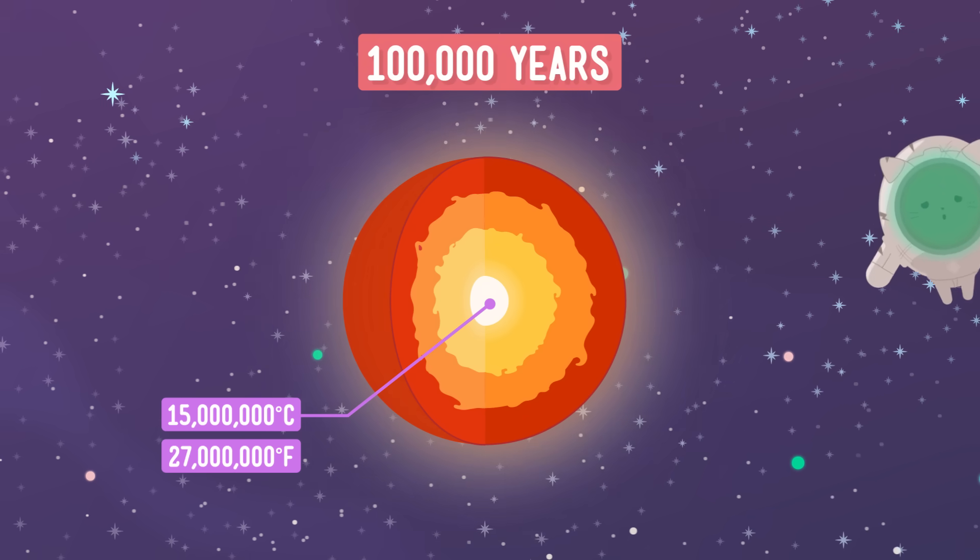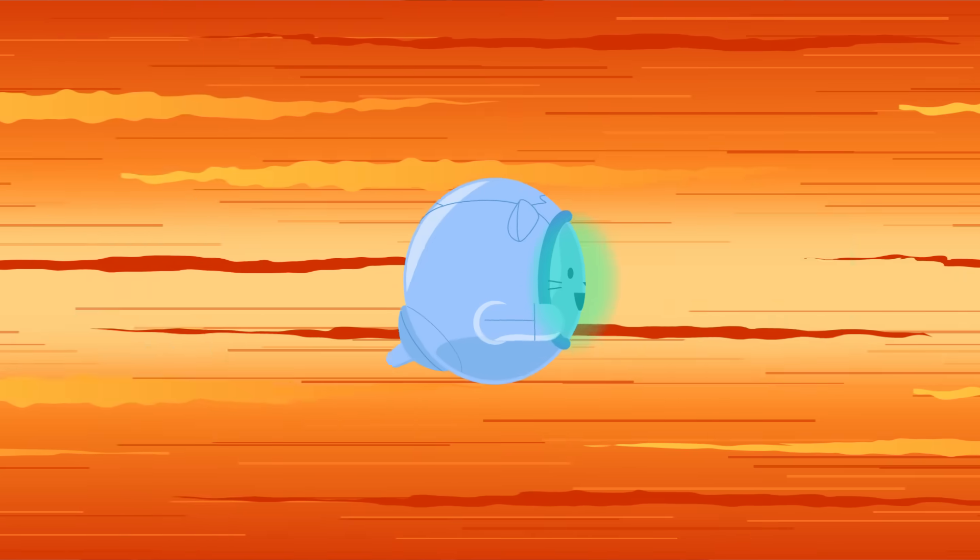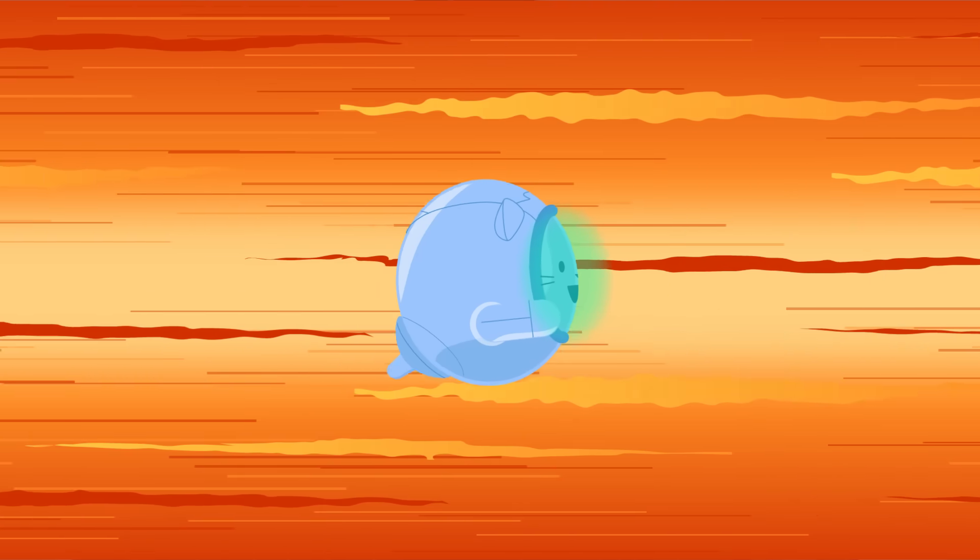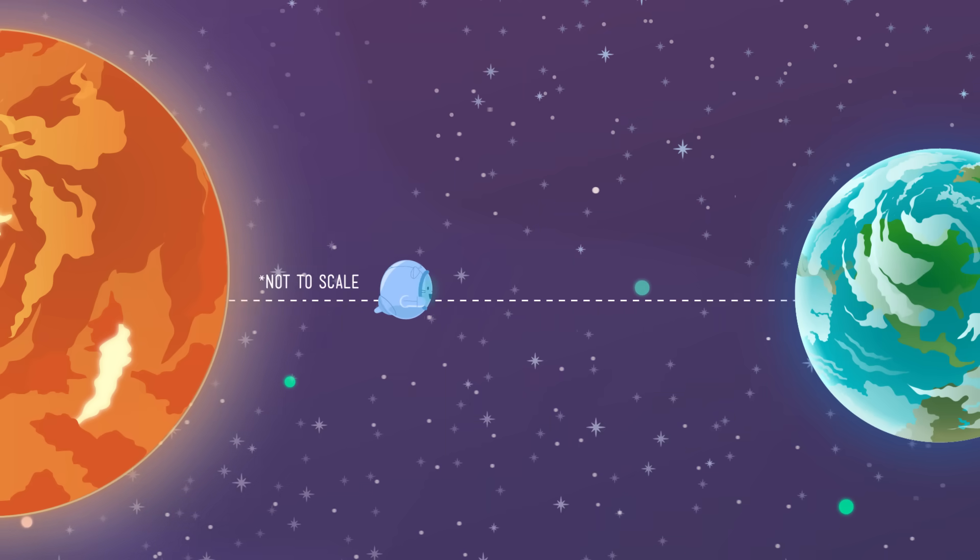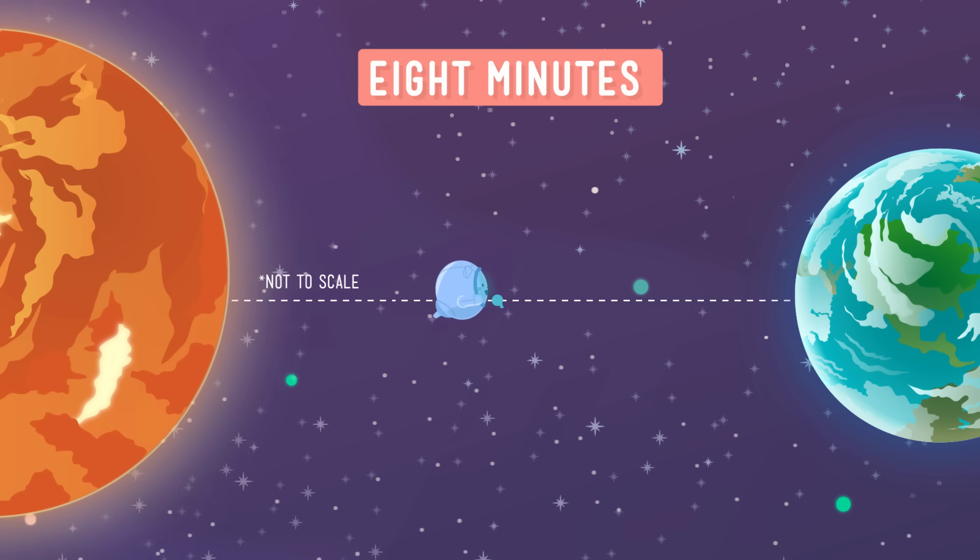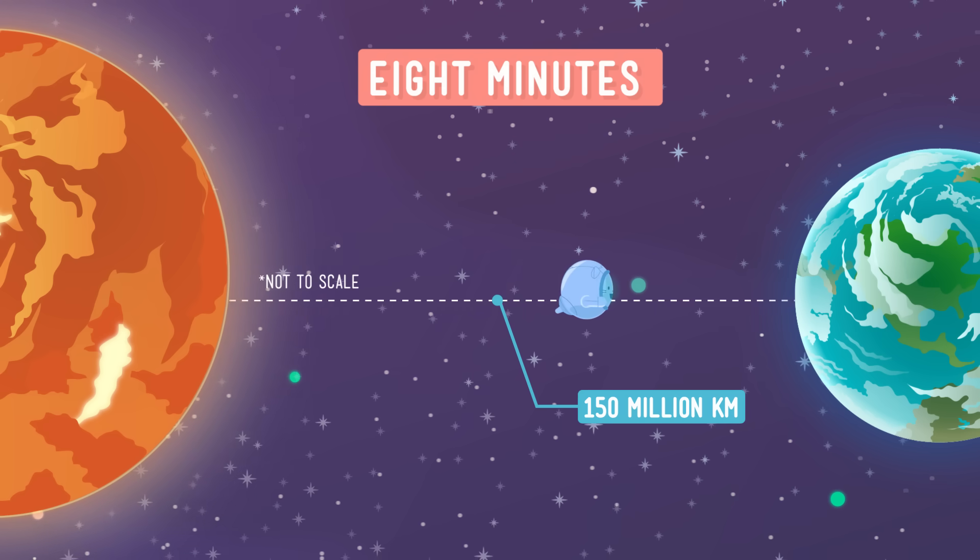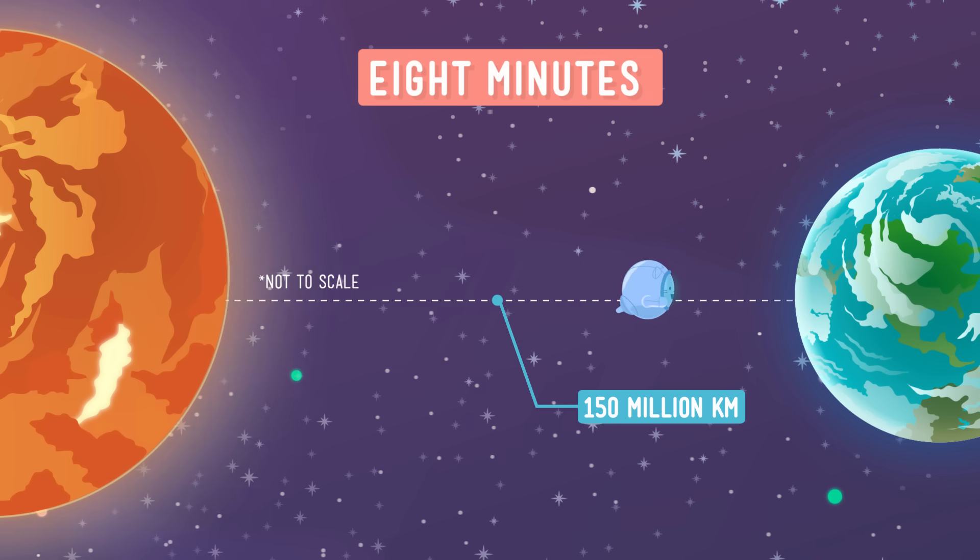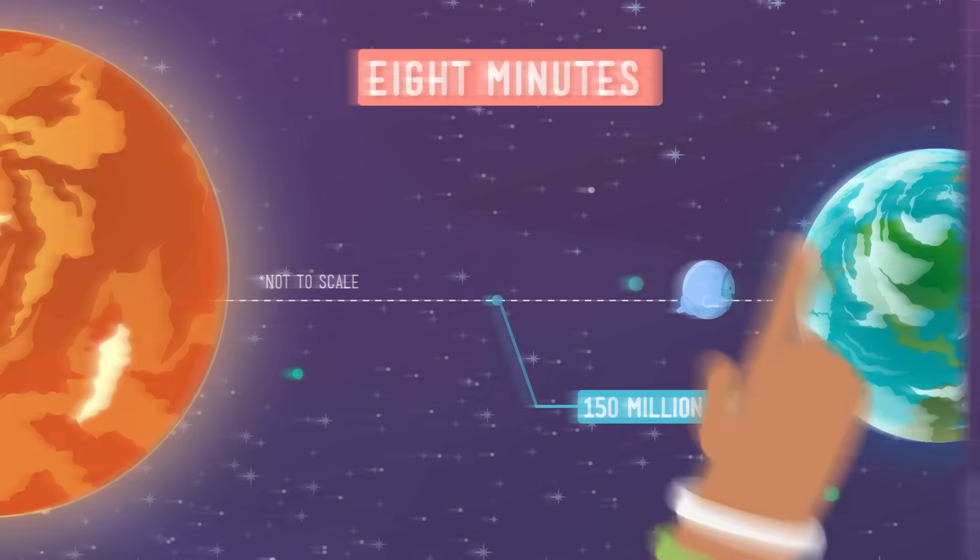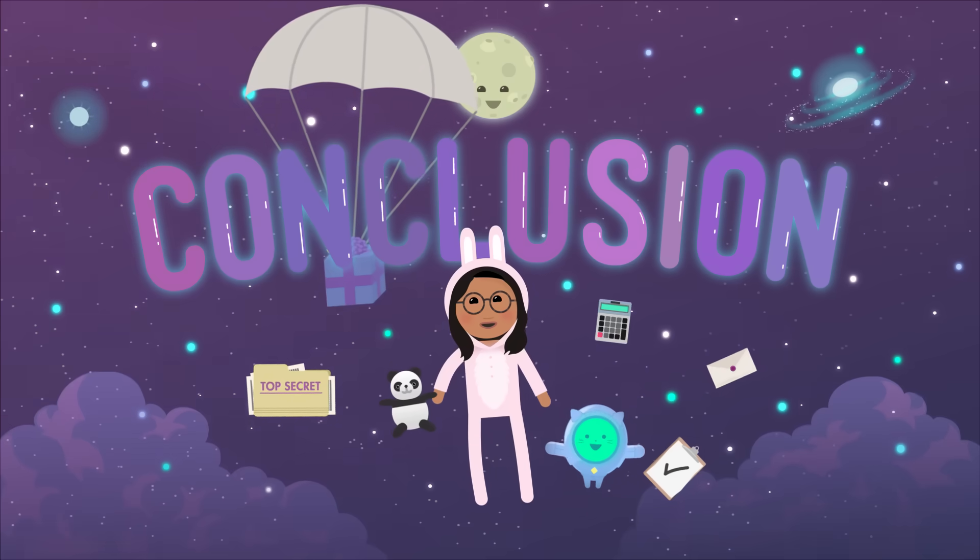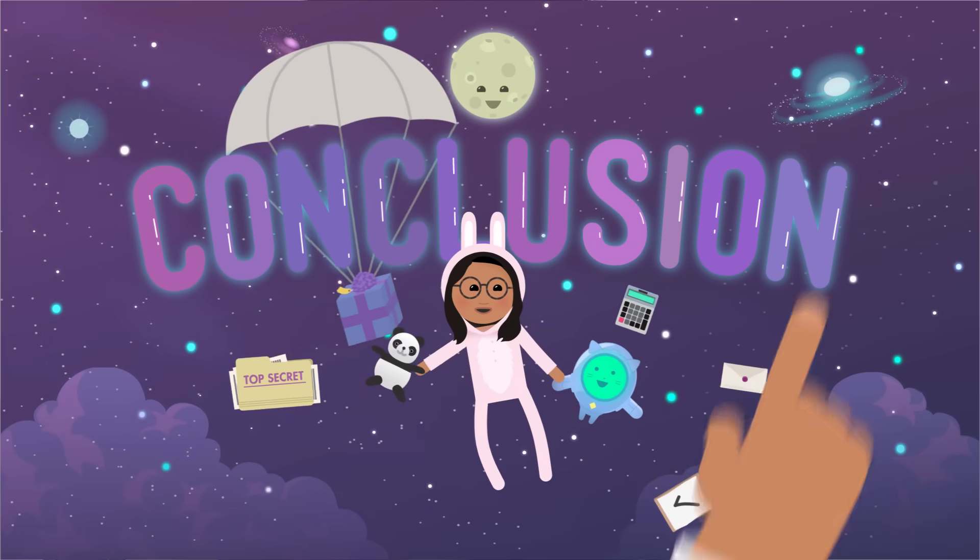But once the energy deep inside the Sun finally gets to the surface, it travels as light and heat all the way to Earth. In fact, it only takes about eight minutes for light to travel approximately 150 million kilometers through space to Earth over here. That's not such a long time.